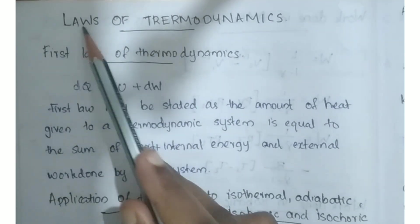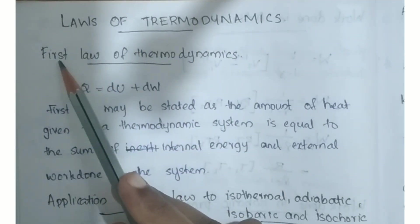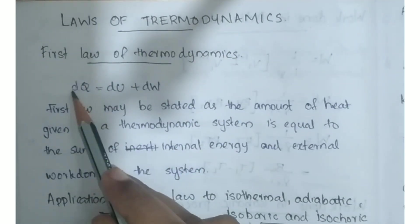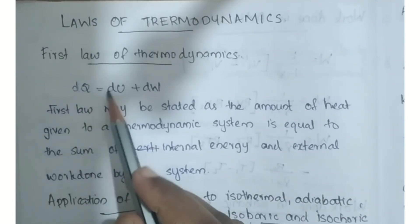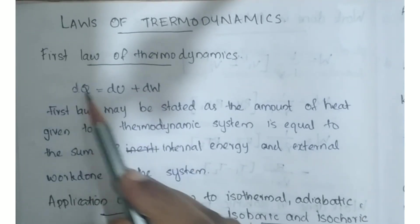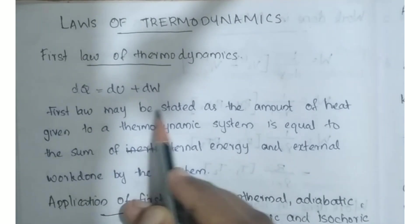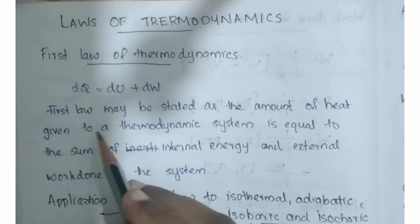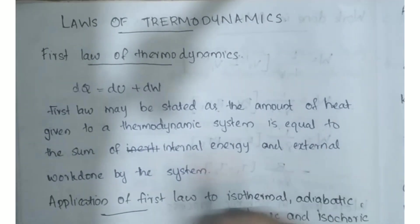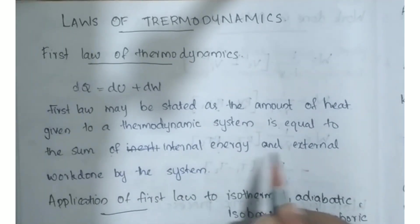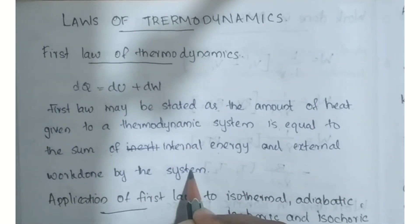We are going to learn the laws of thermodynamics. The first law of thermodynamics states that the amount of heat given to a thermodynamic system is equal to the sum of internal energy and external work done by the system.